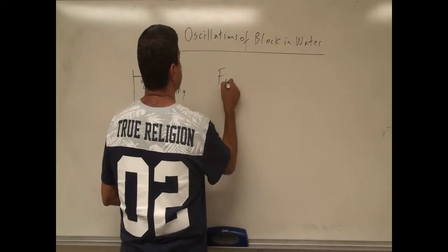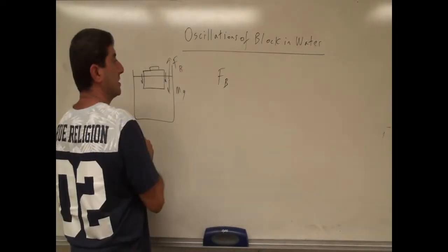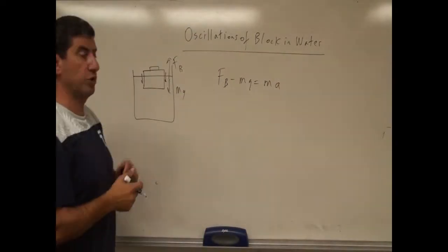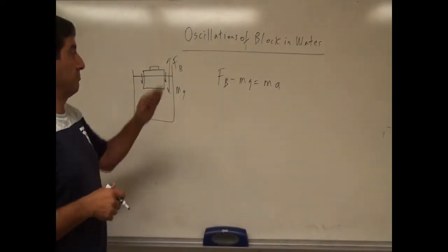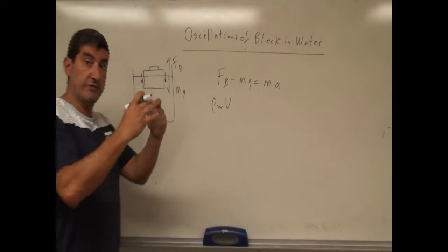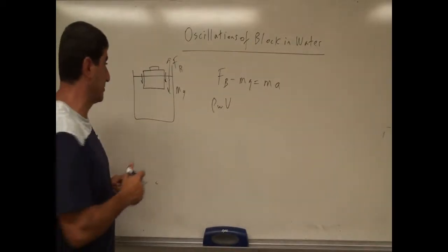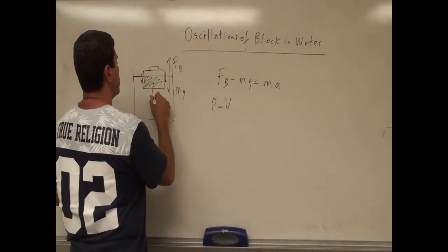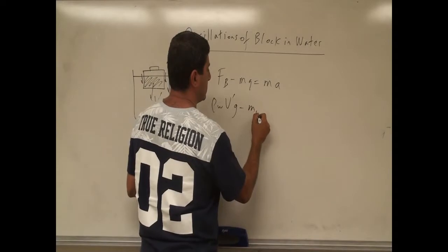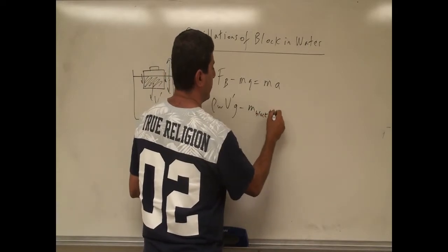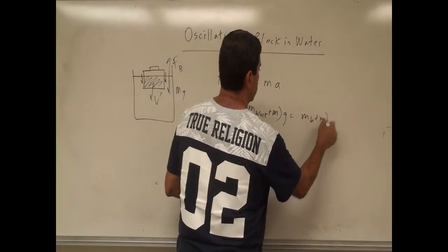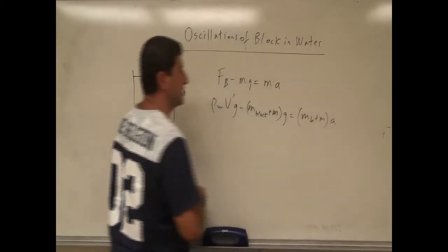So let's see the setup. You have the buoyant force on the block minus the weight of the block equal to the mass of the block times the acceleration. The buoyant force on the block is the density of the water times the volume of the portion of the block that is submerged inside the liquid — we can call that B-prime — times gravity. Then subtract the mass of the block plus whatever extra mass you've added, times gravity, and that equals mass times acceleration.